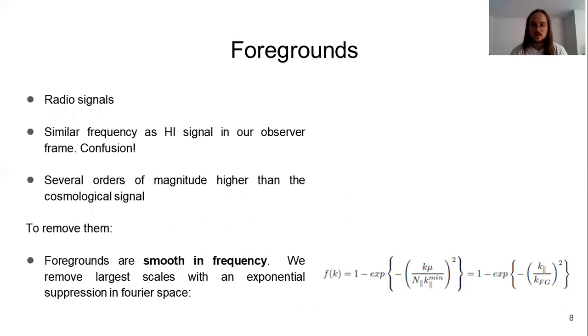The second observational effect is the foreground removal. Foregrounds emit signals of the same frequency as neutral hydrogen in our observer frame, and hence can be confused with the cosmological signal. Then we have to remove them.